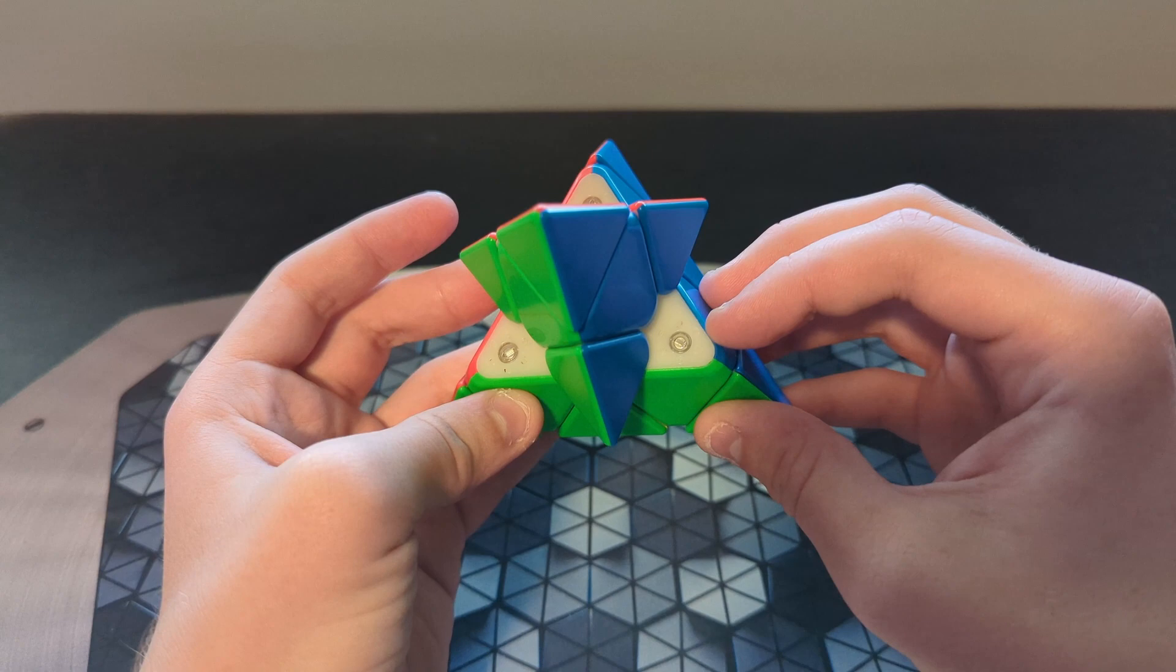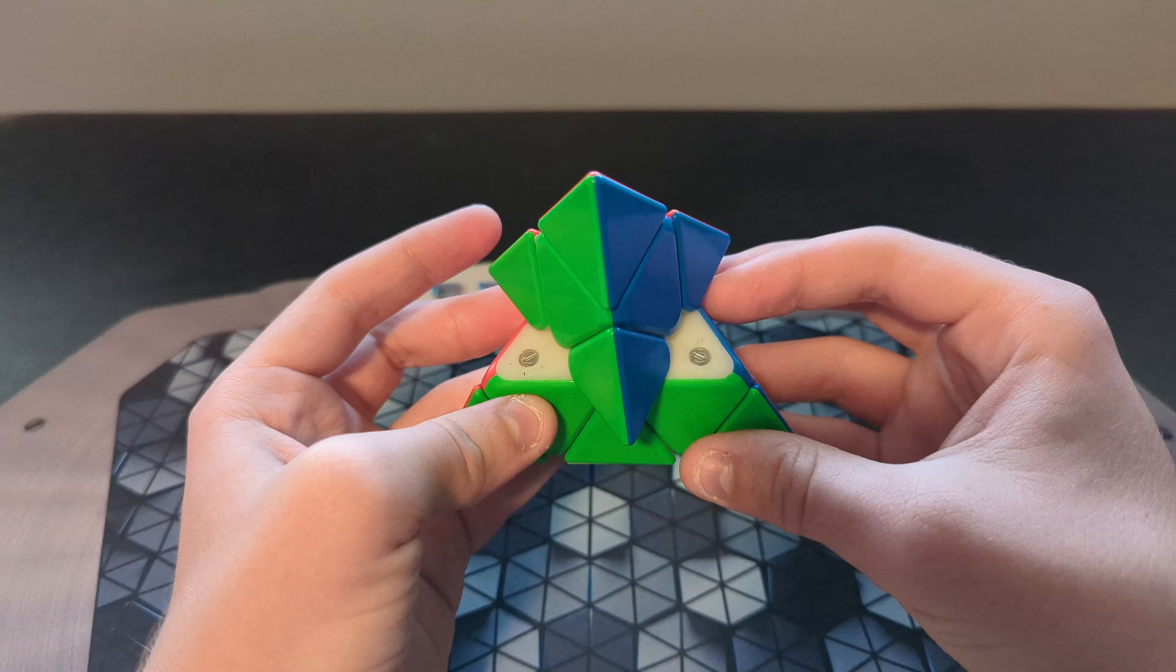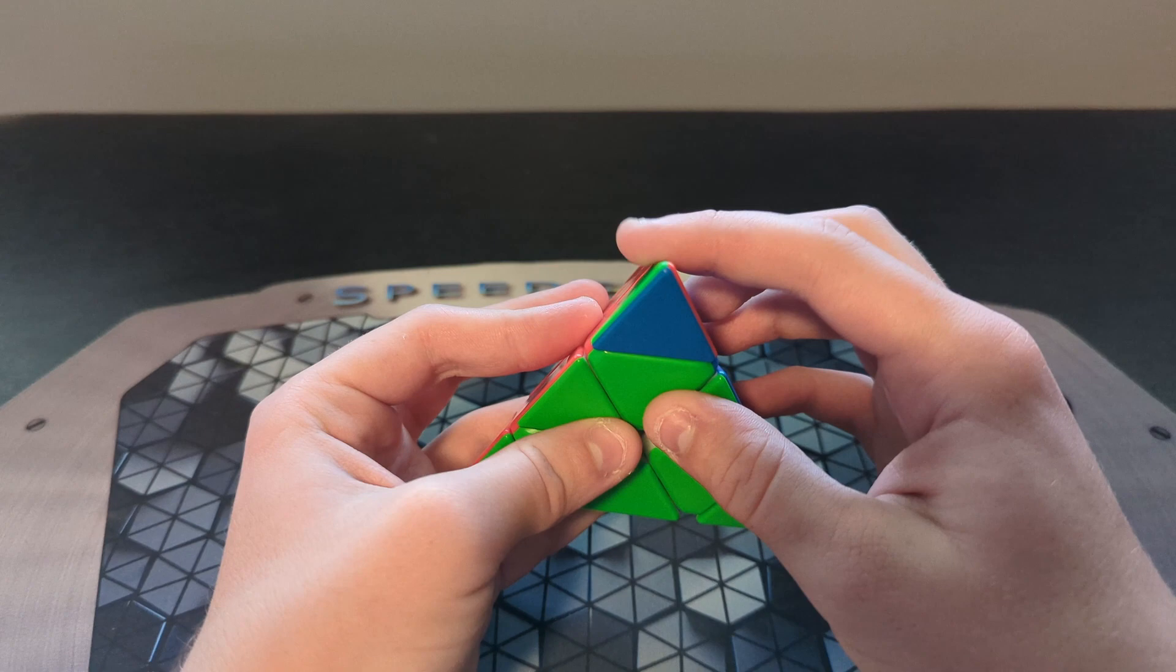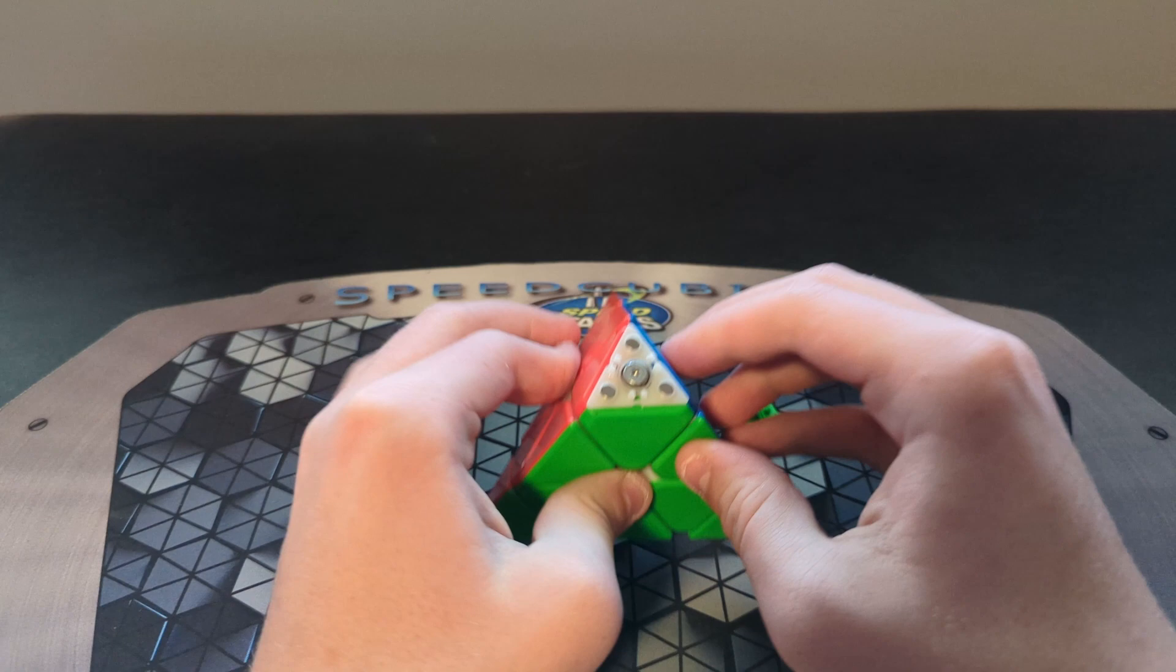The magnets are a little bit weak on this prototype, but YJ told me that they will be strengthening them in the final version, so I don't think that's going to be an issue. My favorite thing about this puzzle is definitely the tips. They're not quite as good as the little magic, but they are very close, and here's why.